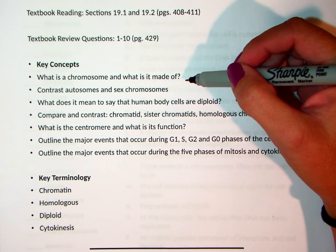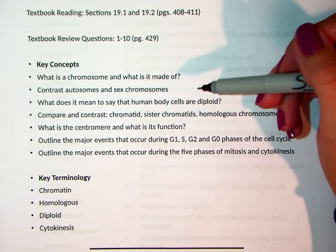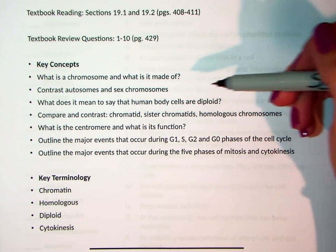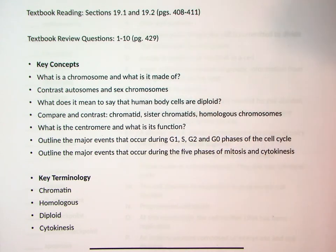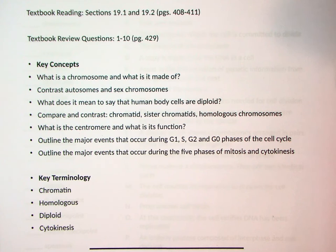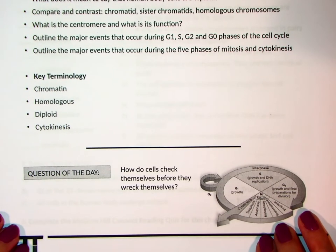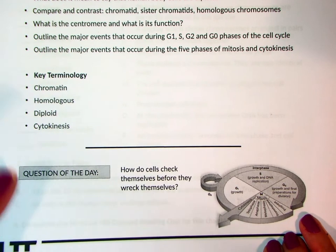So what is a chromosome and what is it made of? What are the differences between autosomes and sex chromosomes? What does it mean to say that human body cells are diploid? Compare and contrast chromatid, sister chromatids, and homologous chromosomes. What is the centromere and what is its function? We'll look at the major events of G1, S, G2, and G0 phases of the cell cycle, and also the five phases of mitosis and cytokinesis. Our question of the day: how do cells check themselves before they wreck themselves?